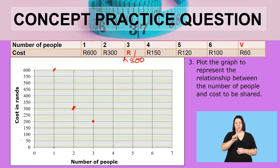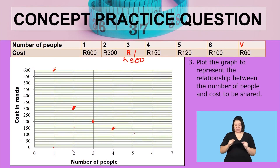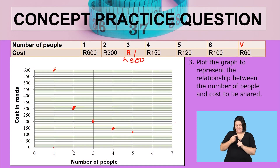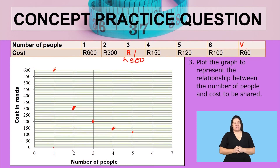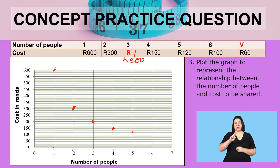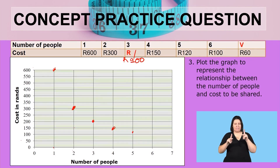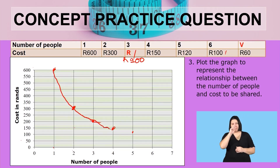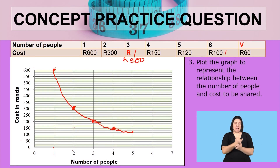For four people, we have 150. For five people, we have 120. You count the small lines — they count up to 10. And we have 60 rent for 10 people. We can stop at six and join these points. Remember, until you join the points, it is not a graph. You can see it is a curve representing inverse proportion.